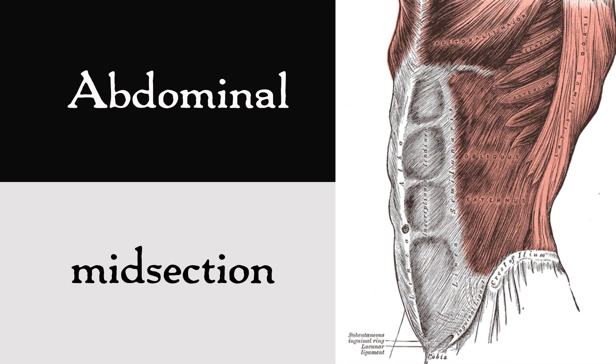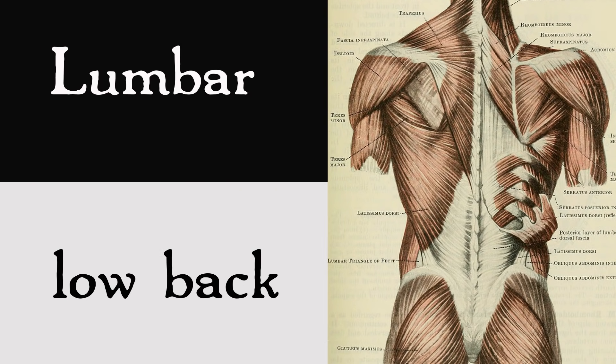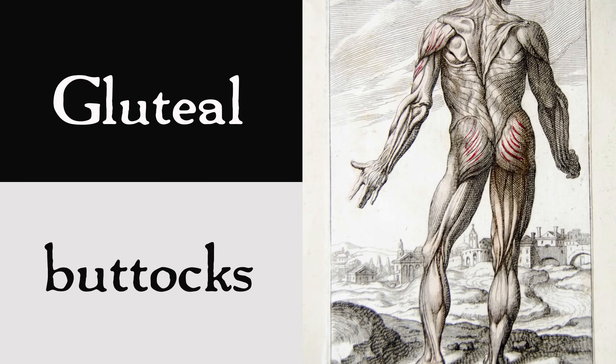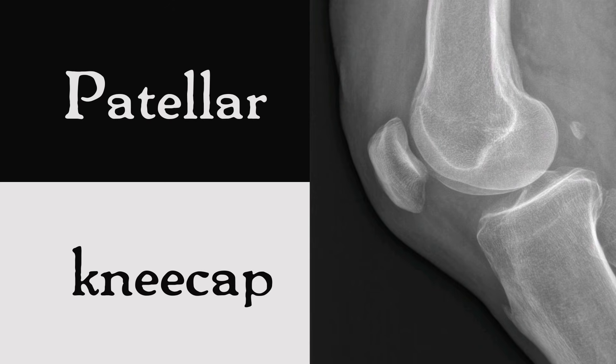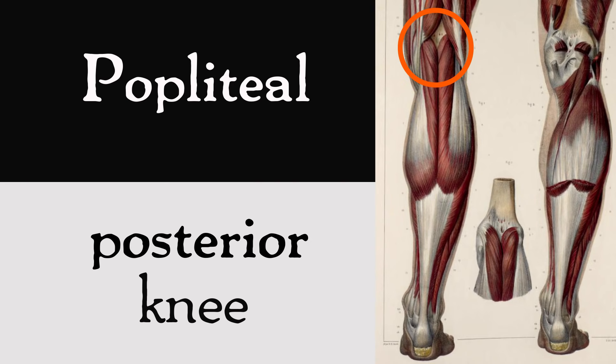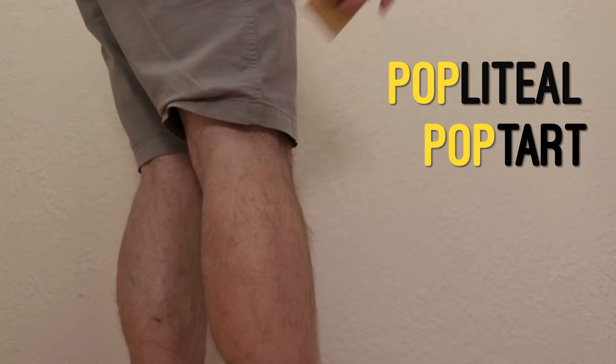The abdominal region is everything from your waist to your thorax — it's not just the abs. The lumbar is the lower back; both start with L, easy enough. The gluteal region is the butt. The femoral region is the thigh region, named after the femur, the big bone in the thigh. The patellar region is the front of the knee, where that kneecap is — that patella, ella, ella. The popliteal region is the back of the knee, appropriately named because you can hold exactly one Pop-Tart back there.